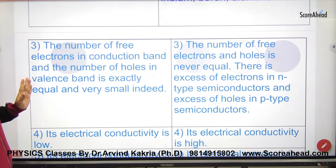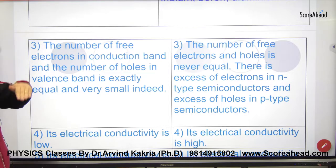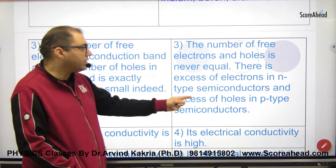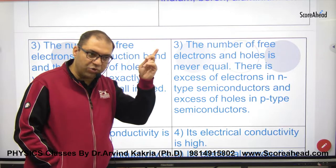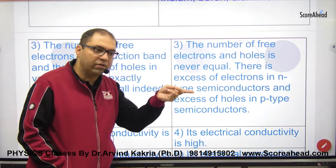Next point: the number of free electrons in conduction band and number of holes in valence band are exactly the same in intrinsic semiconductors. Electrons and holes remain the same. But what happens in extrinsic is there are majority electrons in n-type and majority holes in p-type.